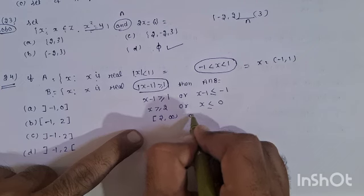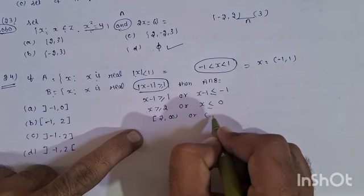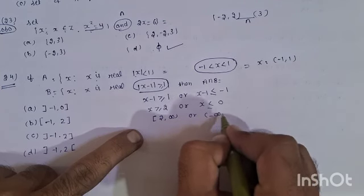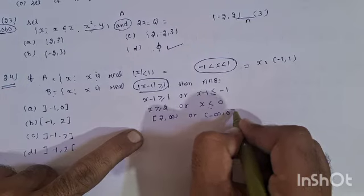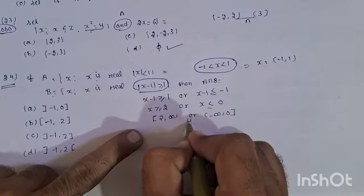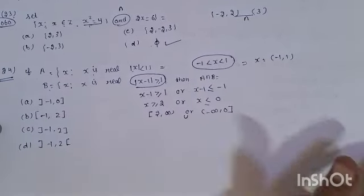Infinity is open, and X is from minus infinity to 0 closed. This means Set B is greater than 2. This is Set A and this is Set B.